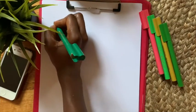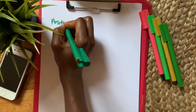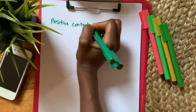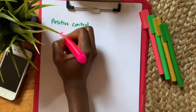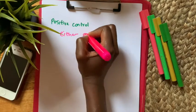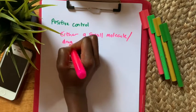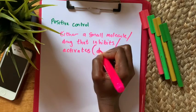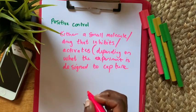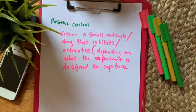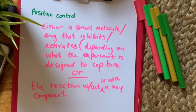Positive controls are a small molecule or drug that inhibits or activates in your experiment — validated so you know it does what you need it to demonstrate. It's your reference to see if any of the new compounds behave the way you want. That's your positive control.